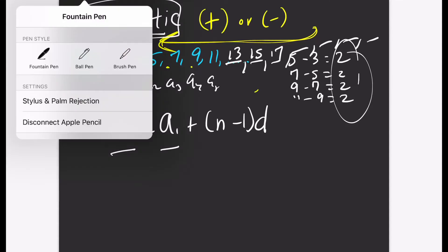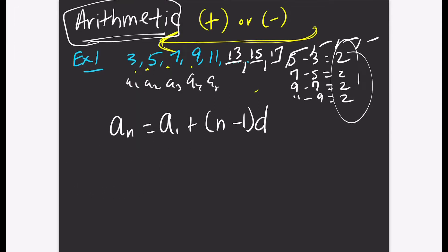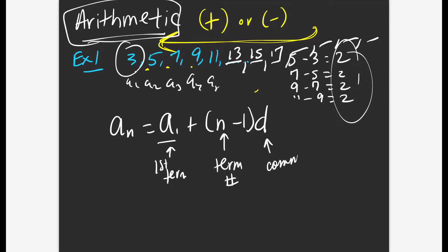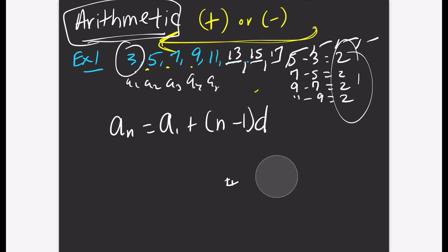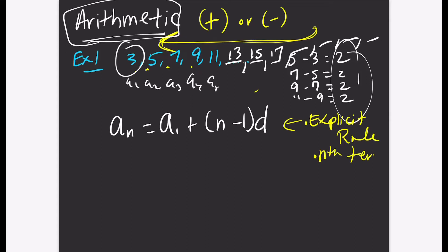Let's talk about all these variables. A sub 1 represents the first term in the sequence — in this problem it's 3. N represents the term number, so since we're trying to find the 50th term, we plug in 50 for n. And d is equal to the common difference. This formula has two names: it can be called the explicit rule, or it can be called the nth term — the formula that helps you find a term in the future.